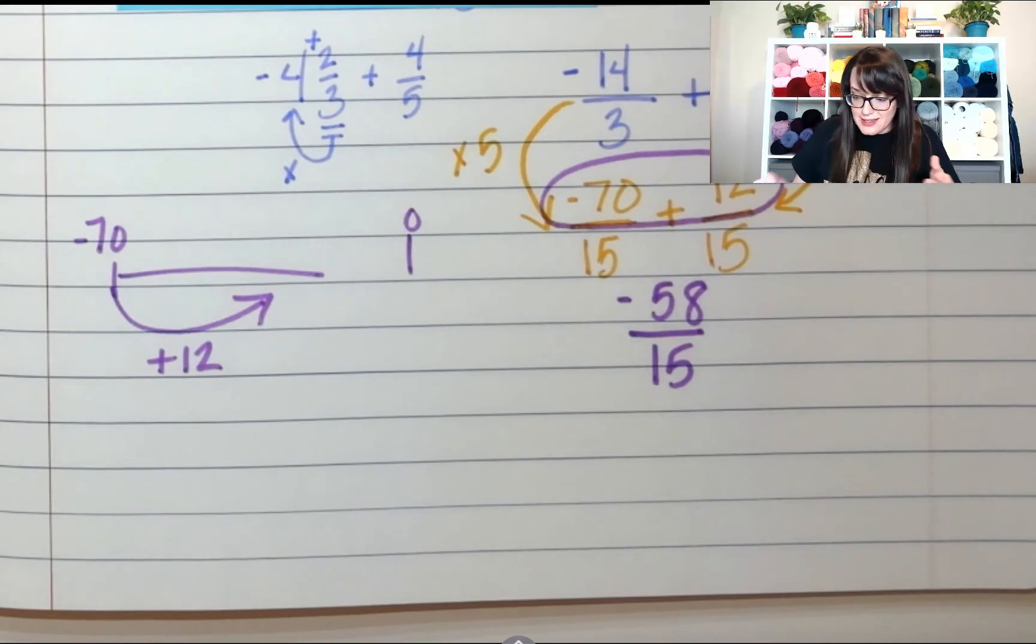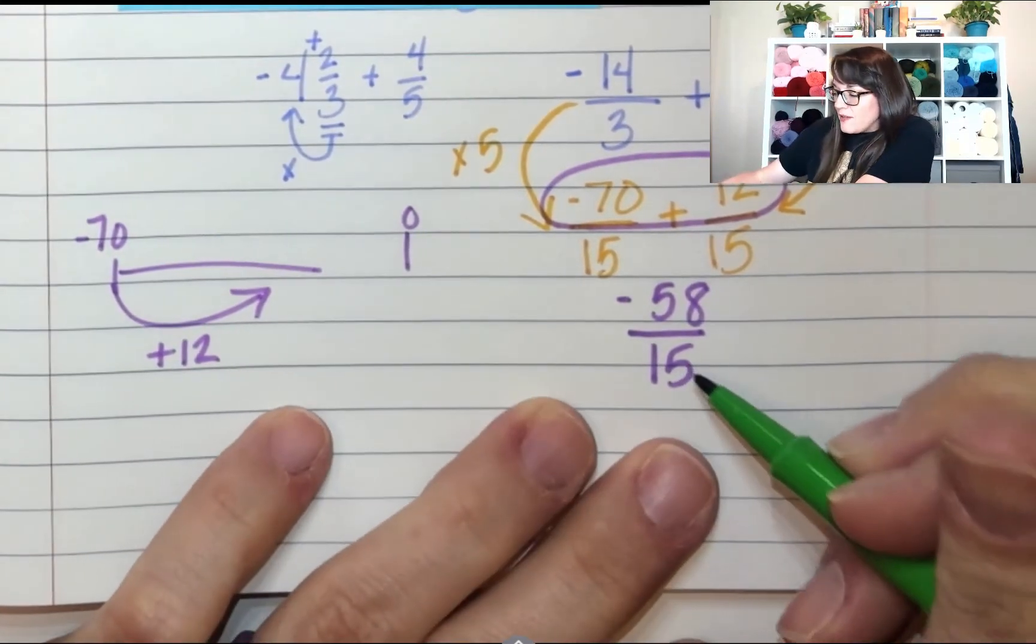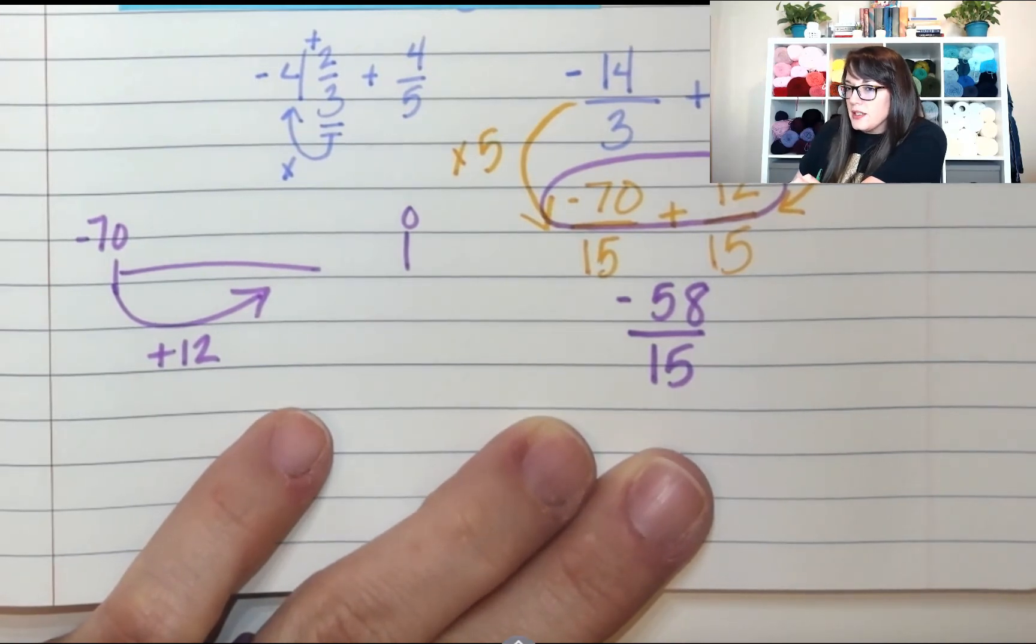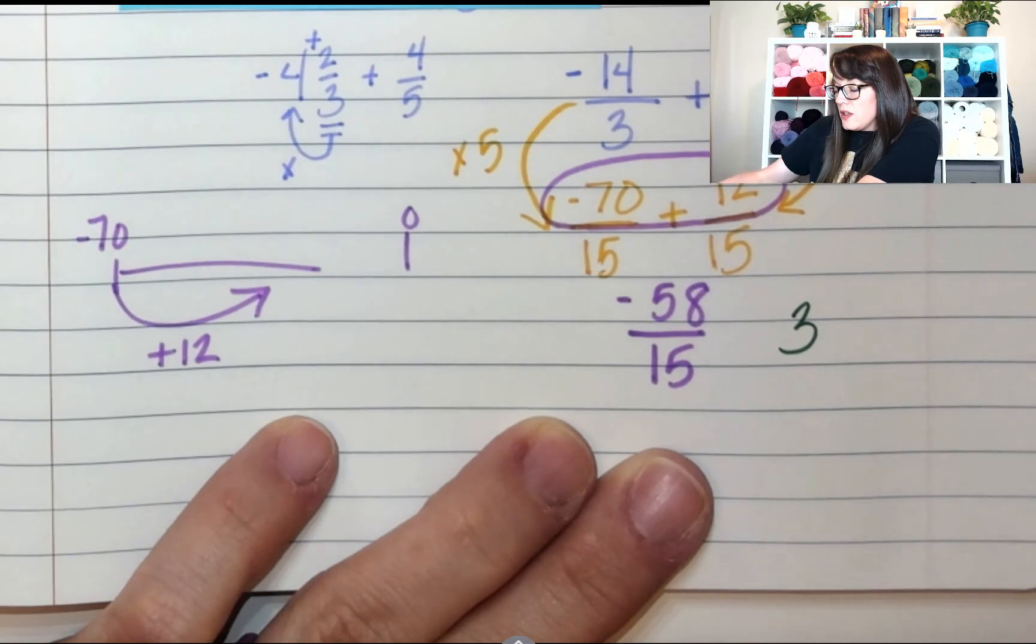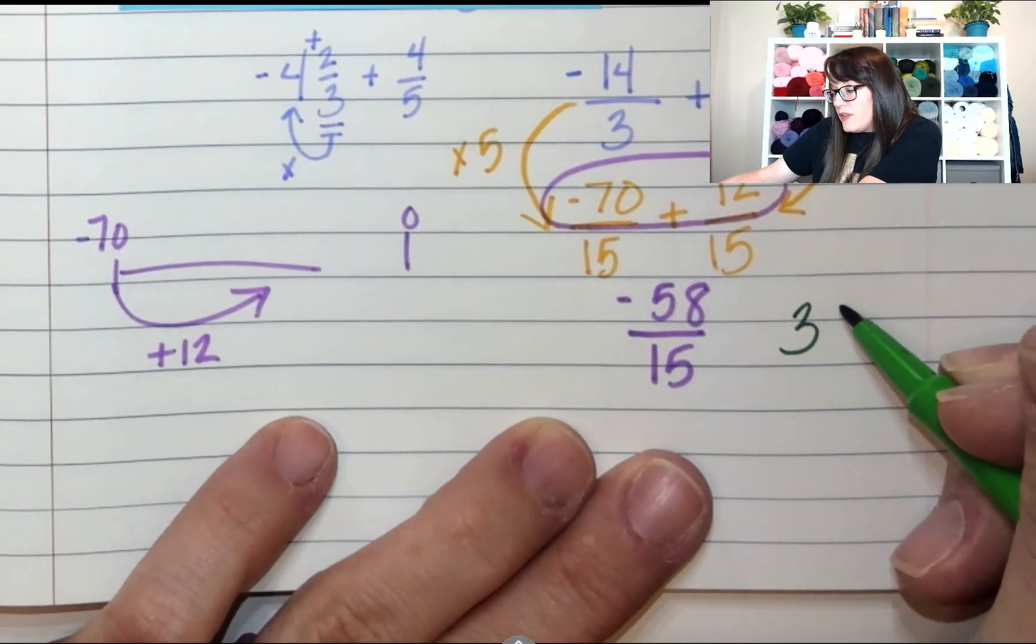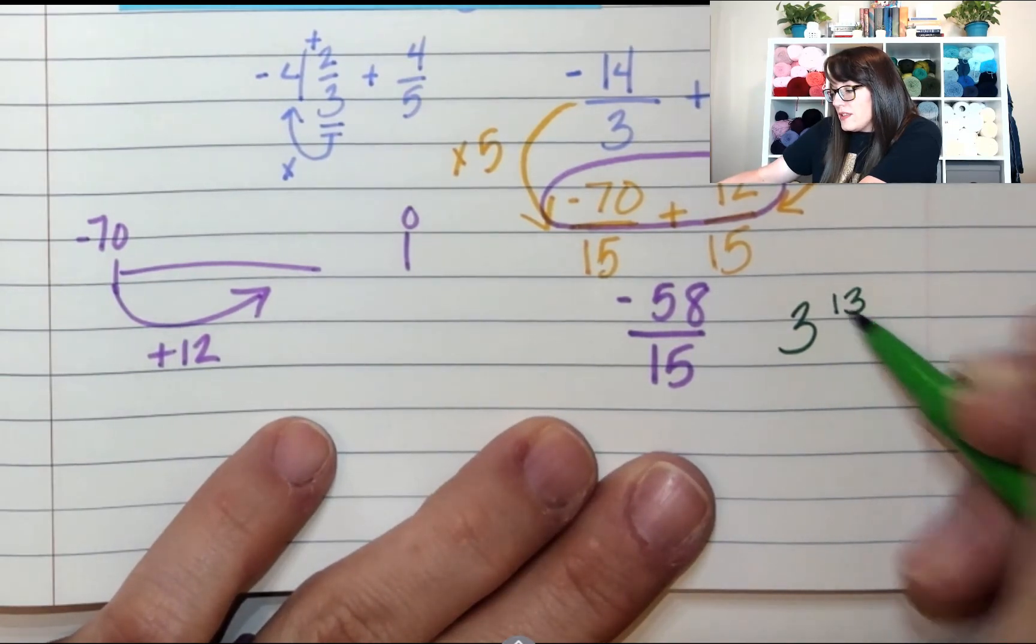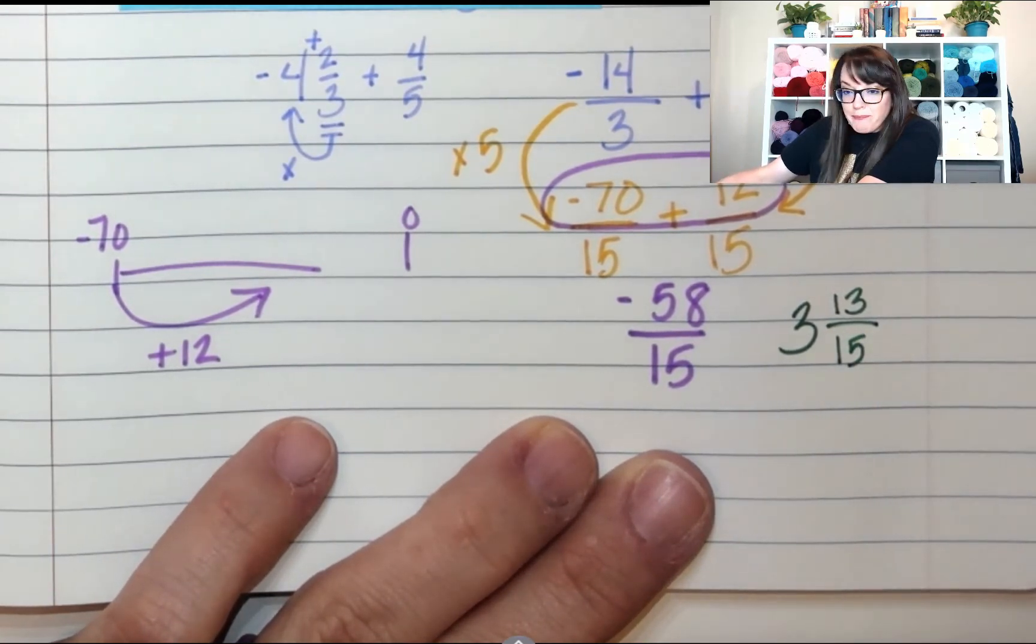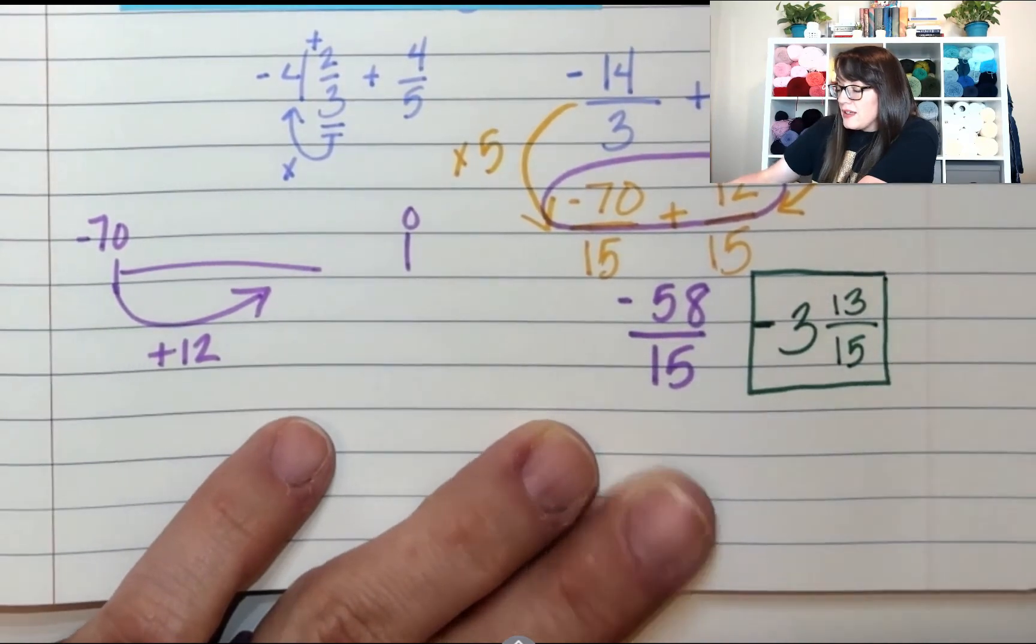And now, bonus step. We need to make this a proper fraction because as is, that's not pretty. So, how many times can 15 go into 58? I know that 15 times 2 is 30. And two 30s make 60. Oh, but that's too much. So, 15 times 3 would be 45. And 45 to 58 would be 13. And then I keep the denominator the same. I forgot something. Gotta keep that negative sign. So, this is my answer: negative 3 and 13/15.